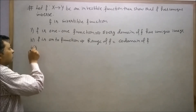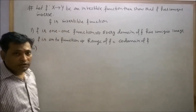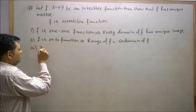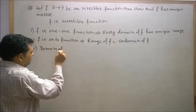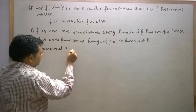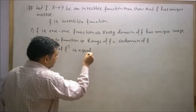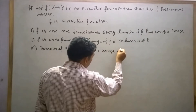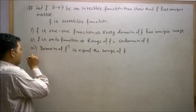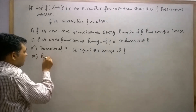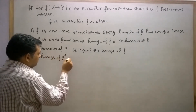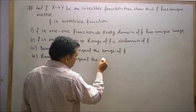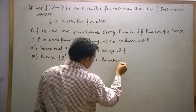Point number 3: Since f is an invertible function, it means its inverse exists. If the inverse exists, then the domain of f inverse is equal to the range of f. Point number 4: The range of f inverse is equal to the domain of f.